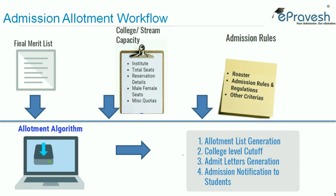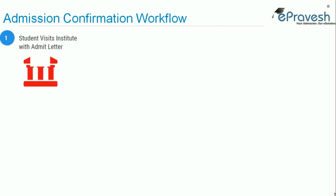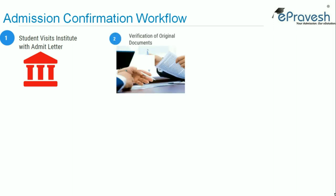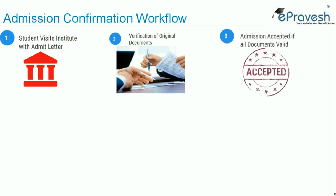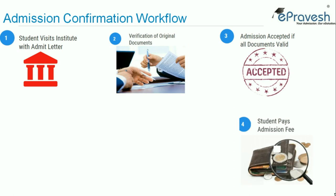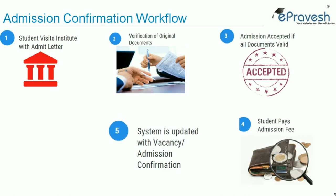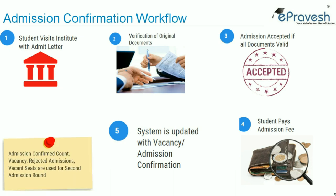Students are notified about their admission status and admit letters can be downloaded from the system. In the admission confirmation workflow, the student downloads the admit letter and visits the institute for confirmation. The institute verifies original documents, and the student is granted admission if all documents are valid. The student can then make fee payment, and the system is updated with vacancy position and admission confirmations.